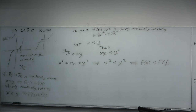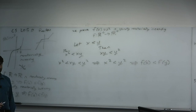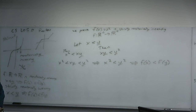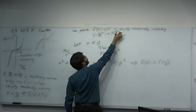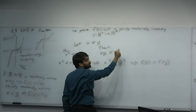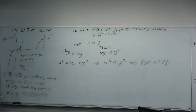X squared, defined for the positive reals, is strictly monotonically increasing. If you consider the parabola restricted to the first quadrant — only positive real numbers — it's not only monotonic but strictly monotonic. Let's take our 10-minute break.